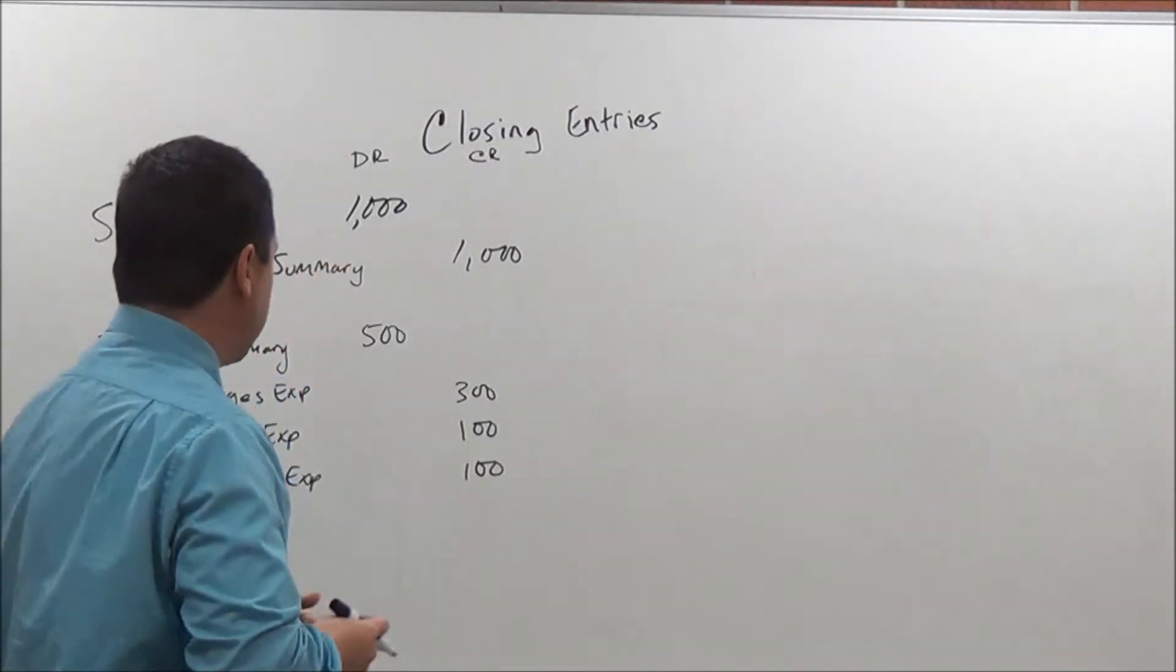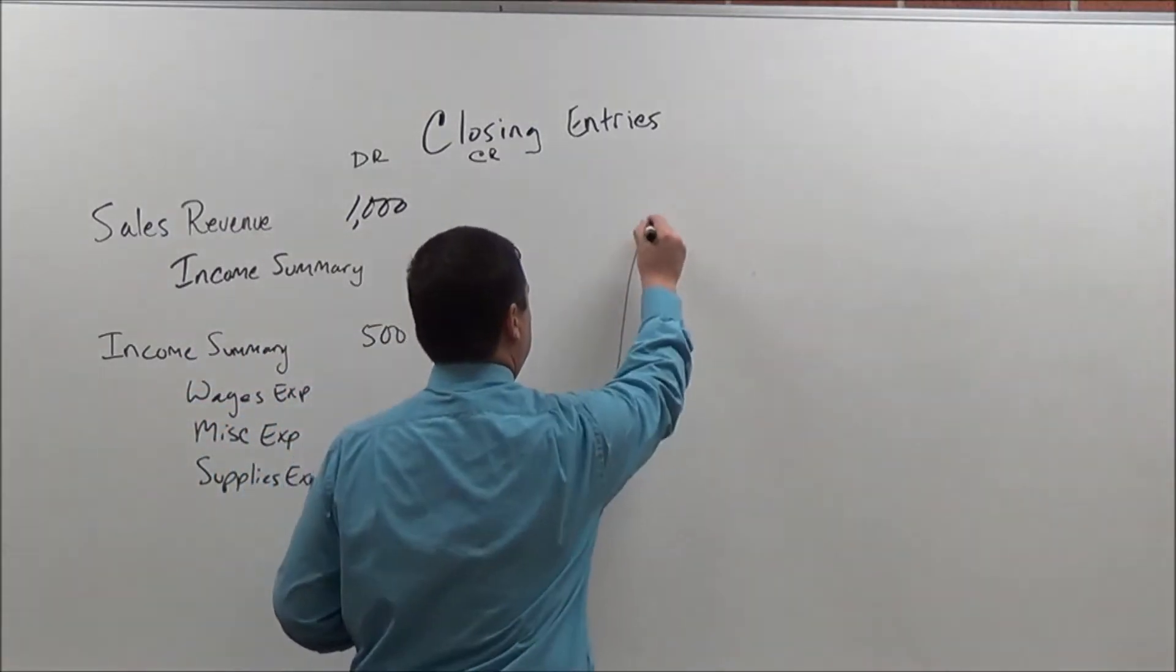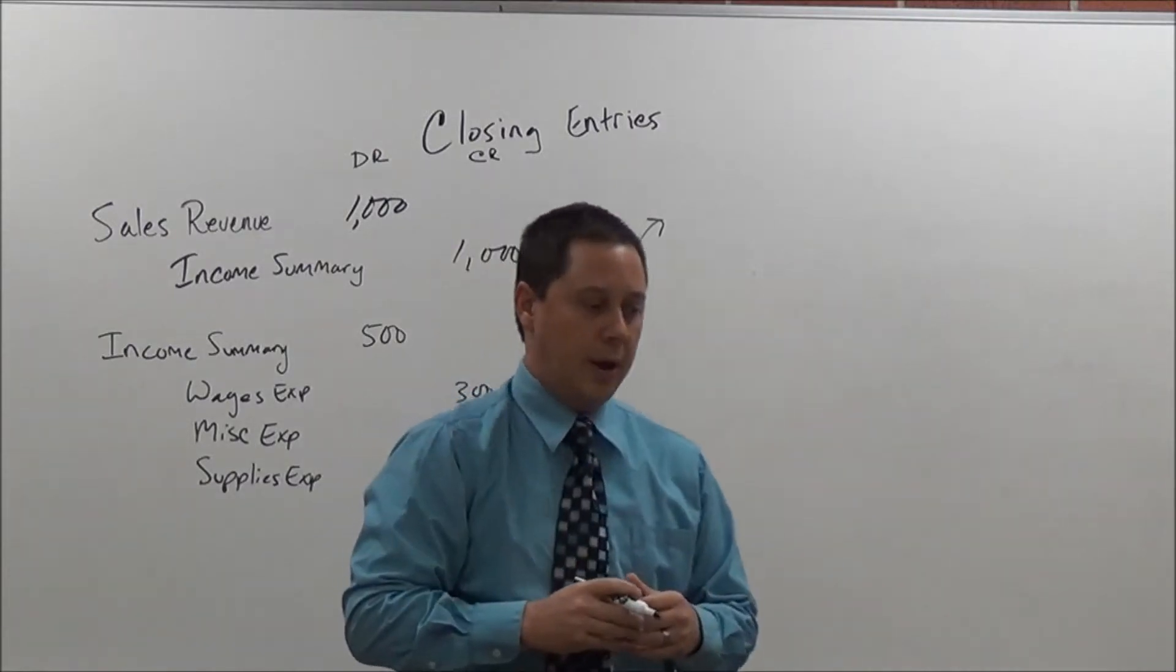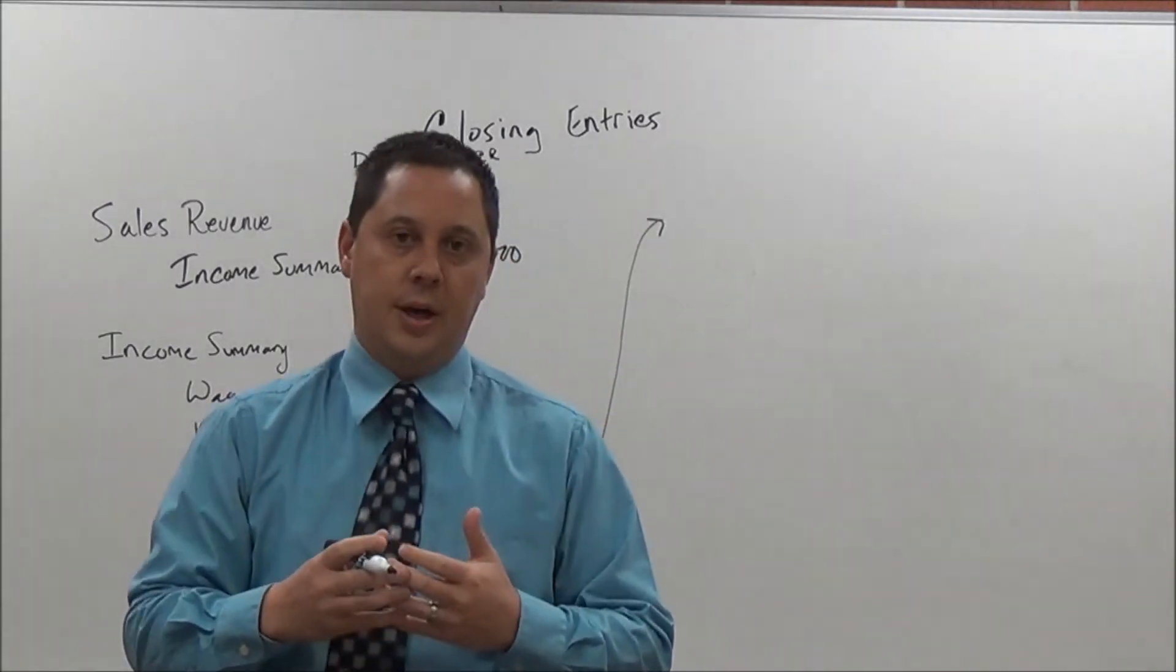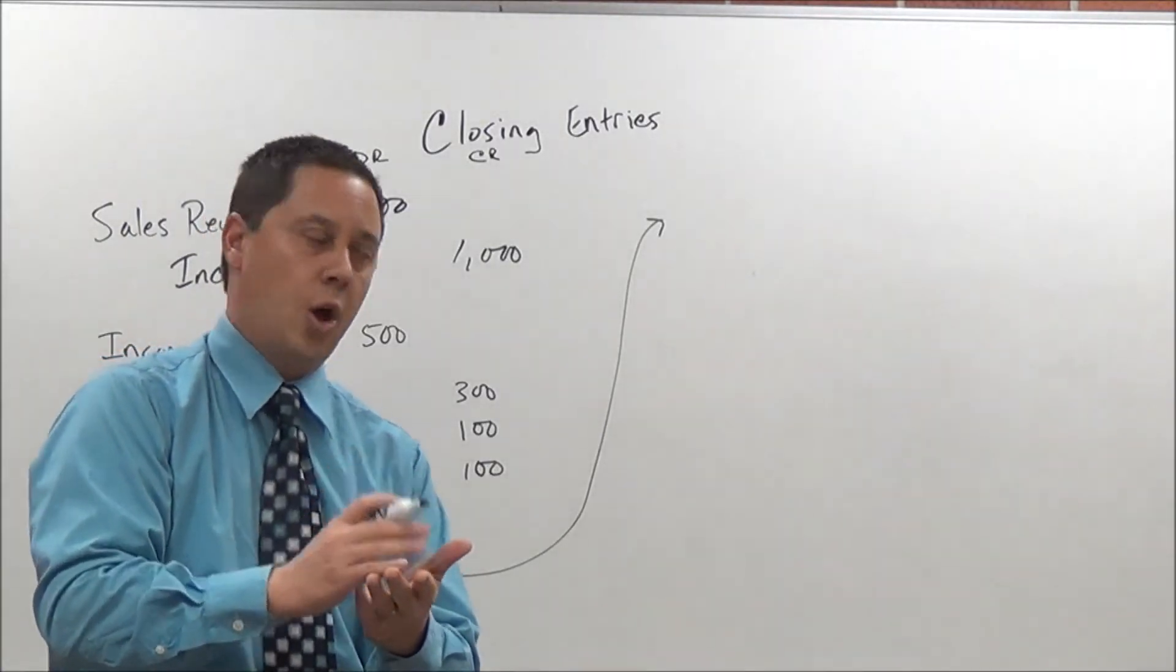So that profit now I will close out in my next part of that. So I'll take this information and bring it over to here. And then we'll close that out. So I'll close that out by doing a couple different things here. So what we're going to do is we'll close it out to our retained earnings and then we'll close out to our dividends also.